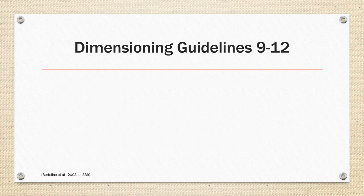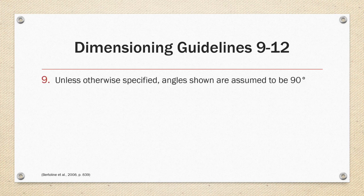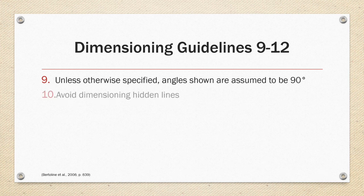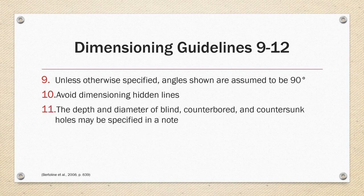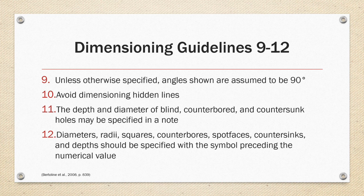Guidelines nine through 12 are next as we approach the end of the list. Nine. Unless otherwise specified angles shown are assumed to be 90 degrees. Ten. Avoid dimensioning hidden lines. Eleven. The depth and diameter of blind counterboard and countersunk holes may be specified in a note. And twelve. Diameters, radii, squares, counterboards, spot faces, sinks, and depths should be specified with the symbol preceding the numerical value.